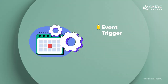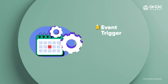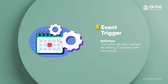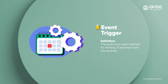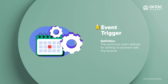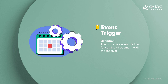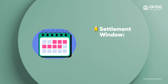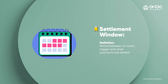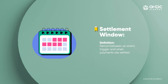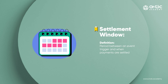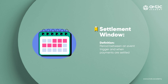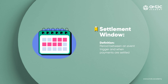Next, they decide and agree on the event trigger — which specific event will trigger payment settlement with the receiver, such as order delivery, return, or completion of the return period. Then there is the settlement window, which is the time between the event trigger and payment settlement — usually a set number of working days from the date of collection, shipment, delivery, or the end of the return window.